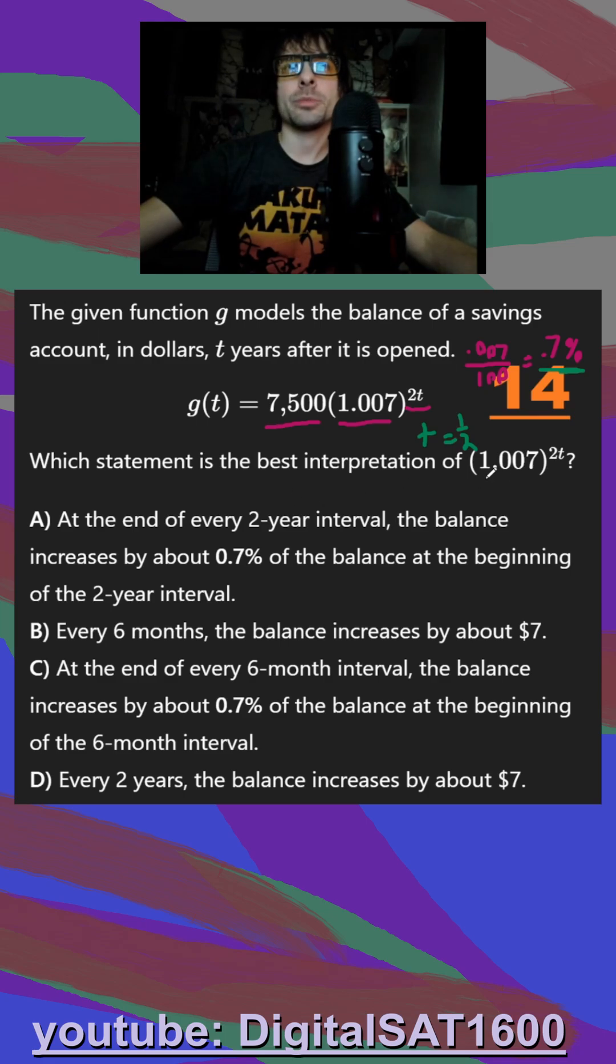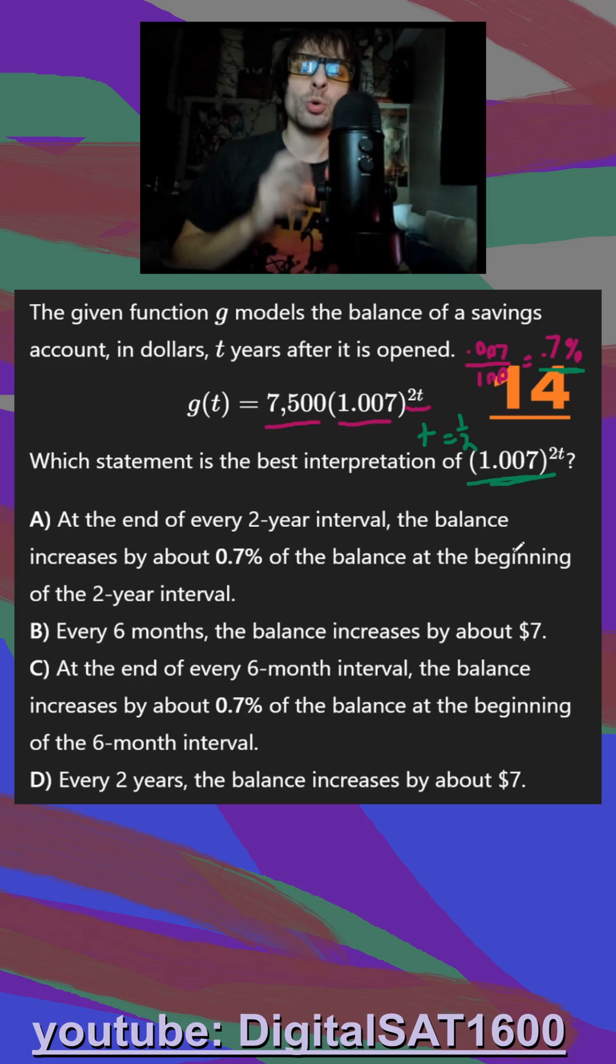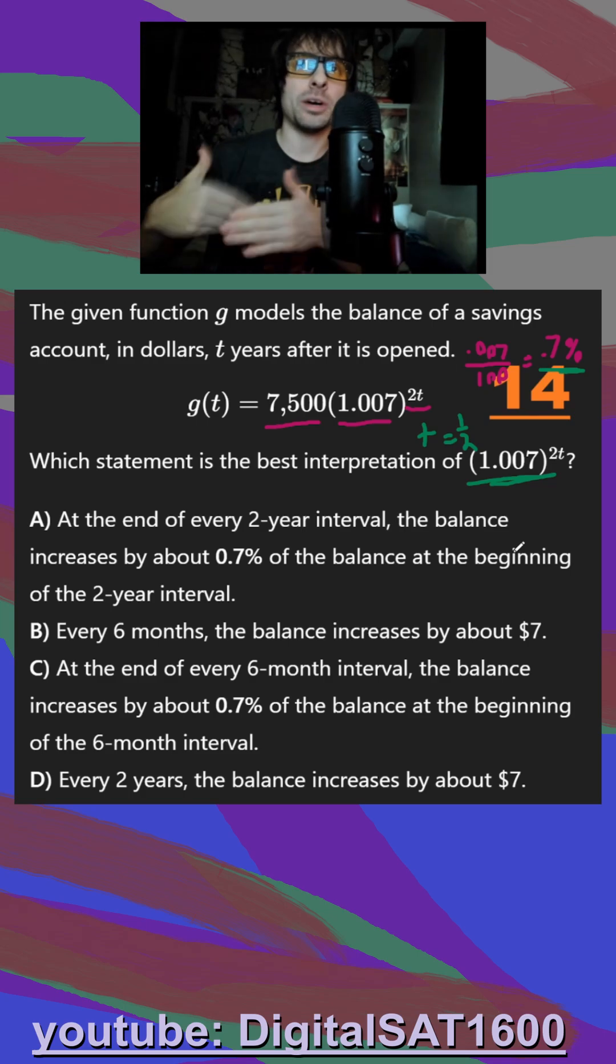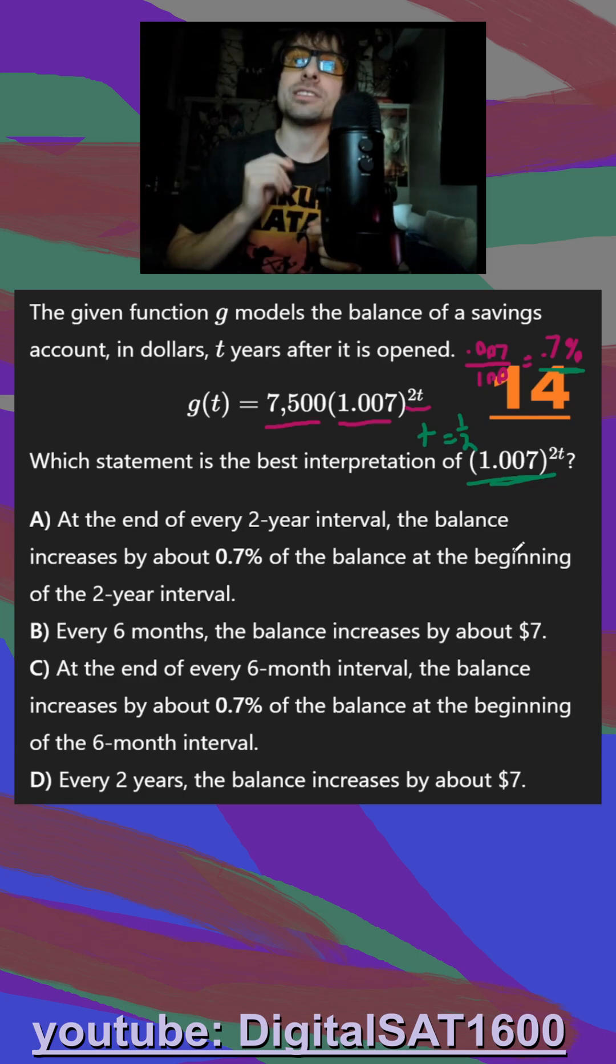They say which statement is the best interpretation of this? Well, I think we already kind of nailed it. Our goal is to always get our exponent to one. So we're looking for when t is one half, we get an increase of 0.7%.